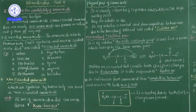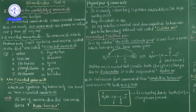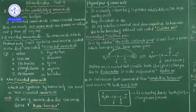The reason amino acids show amphoteric behavior is due to the formation of an internal salt called the zwitterion (Z-W-I-T-T-E-R). The zwitterion is the ionic form of the amino acid. A zwitterion contains both a positive charge and a negative charge, which is why it behaves as an amphoteric species.